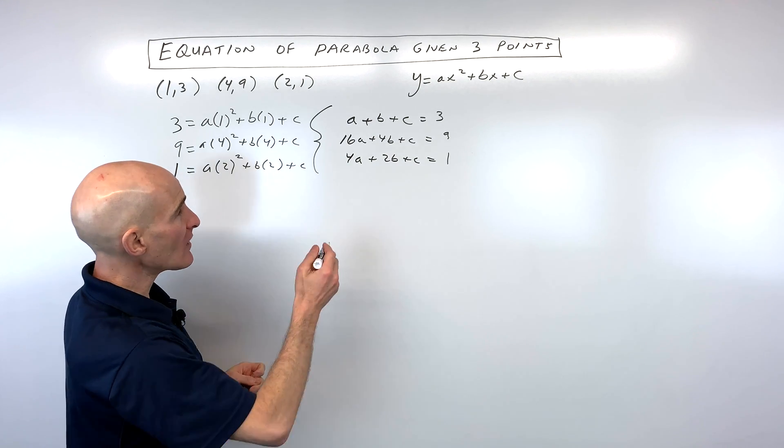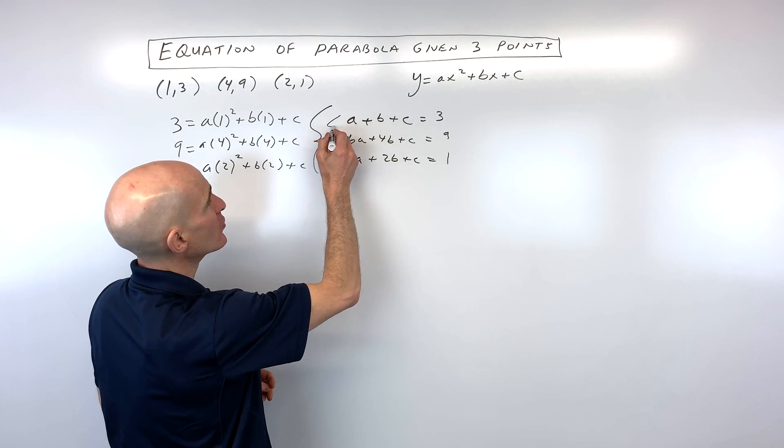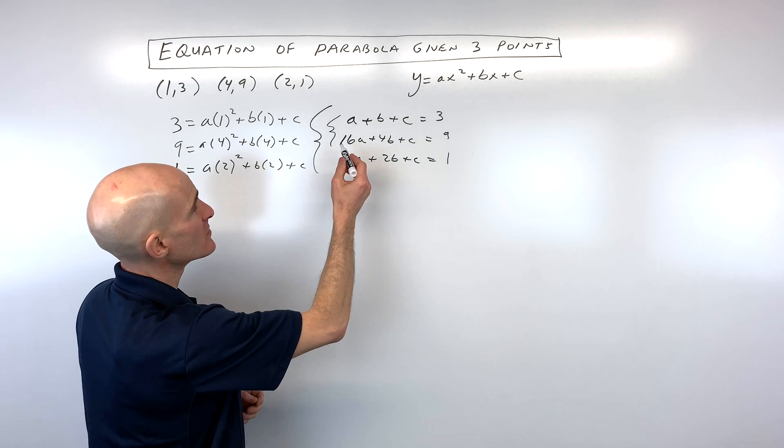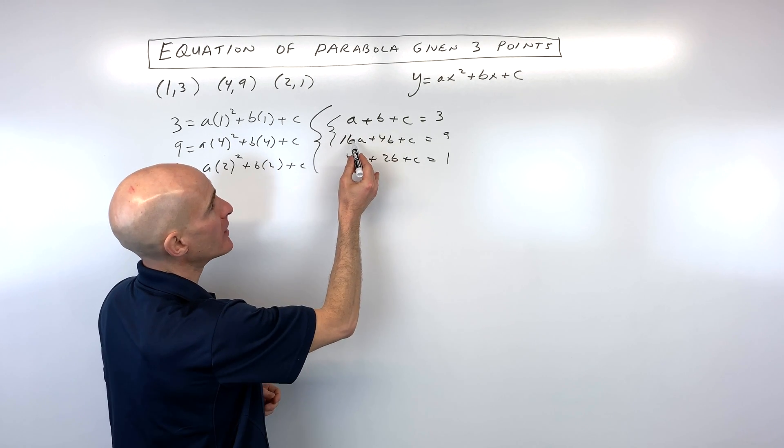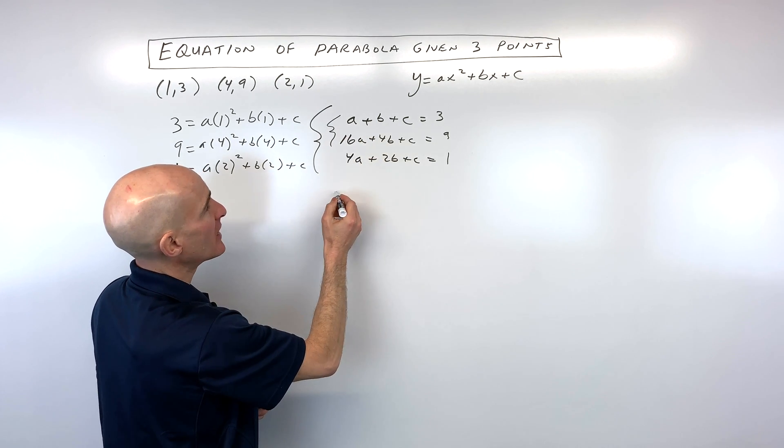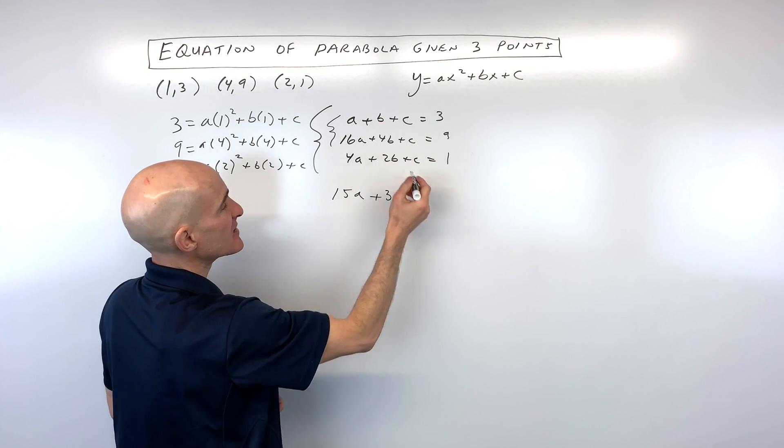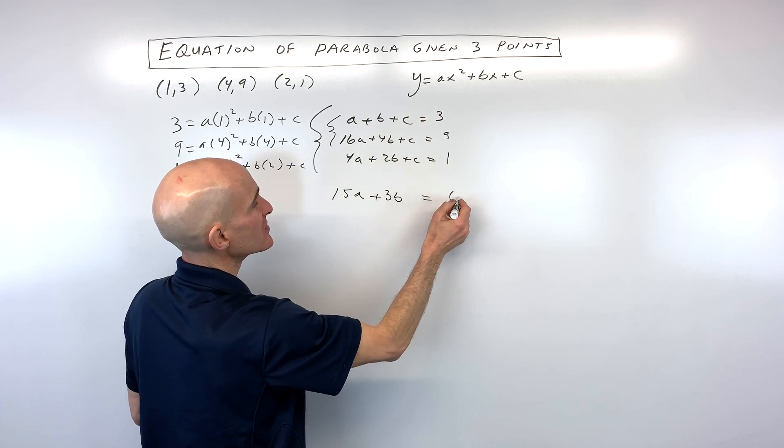So what I'm going to do is I'm going to take these first two equations and I'm going to subtract them. So what I'm going to do is I'm just going to take the bottom one minus the top one. So 16a minus 1a is 15a. 4b minus 1b is 3b. c minus c, that's 0. And 9 minus 3 is 6.